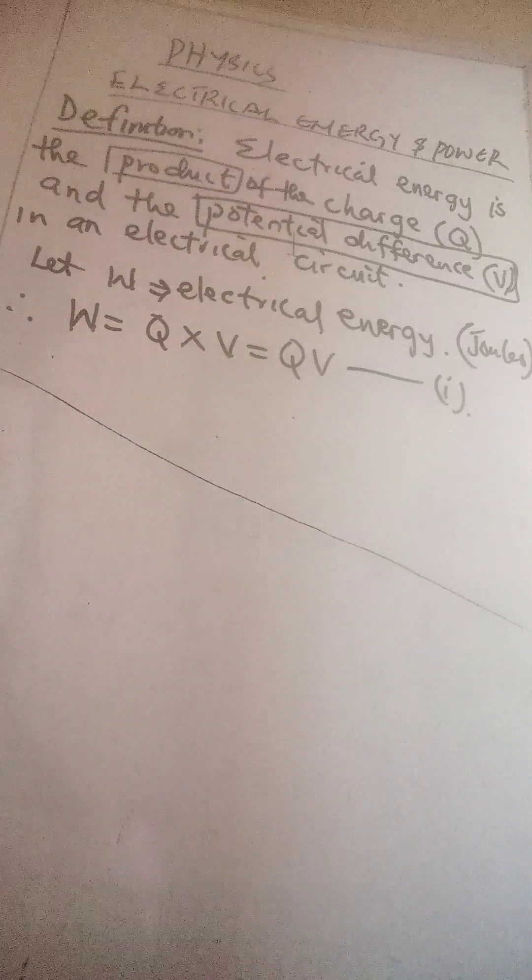From the definition of electrical energy, we can form an equation, which I name as equation 1: electrical energy equals the quantity of charge multiplied by the potential difference V. Don't forget, potential difference is also referred to as voltage.